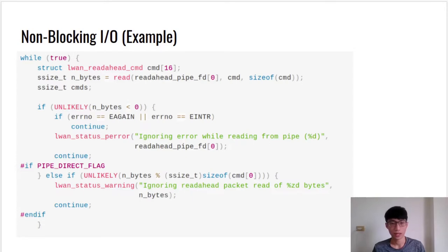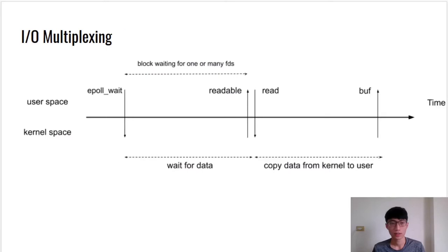LWAN will skip this iteration if data is not ready. Remaining work is to find an opportunity to read the file again. I/O multiplexing is the capability to tell the kernel that we want to be notified if one or more I/O conditions are ready, like input is ready to be read or a descriptor is capable of taking more output. There are several system calls that can achieve it, such as epoll_wait and select. Both of them are able to monitor multiple file descriptors, waiting until one or more become available for some class of I/O operation.